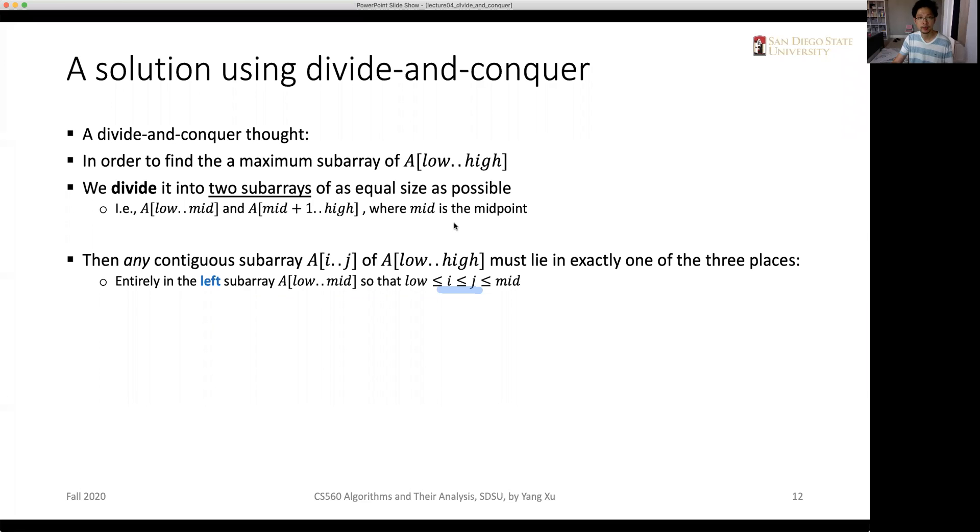The second case: it should be entirely in the right subarray, where i and j is between mid plus one and high. In the third case, i is between low and mid and j is between mid and high, so it is crossing the midpoint. Mid is in the middle between i and j.